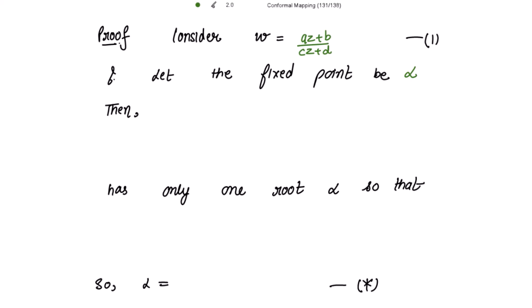Because we need to find the fixed point α, let's put w equal to z. For w = z, we get z = (az + b)/(cz + d), and on cross multiplying we get the quadratic equation in z: cz² + (d - a)z - b = 0.